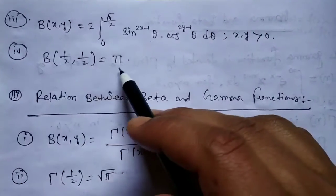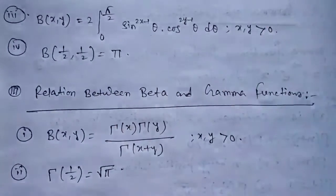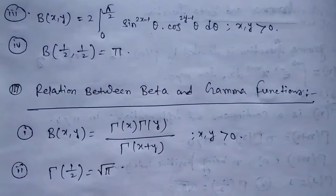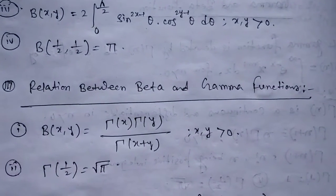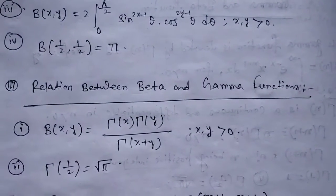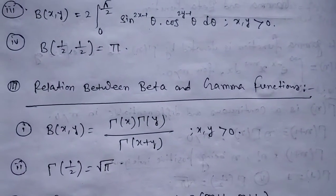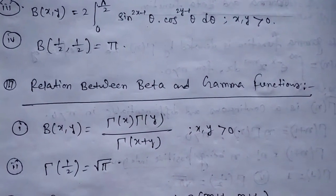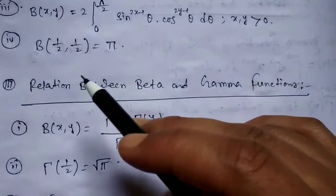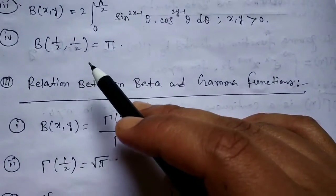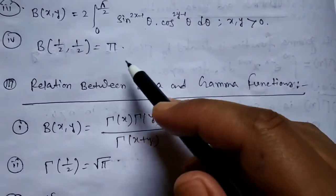Property 4: β(1/2, 1/2) = π. If we put x = 1/2 and y = 1/2 in the Beta function, we get β(1/2, 1/2) = π.